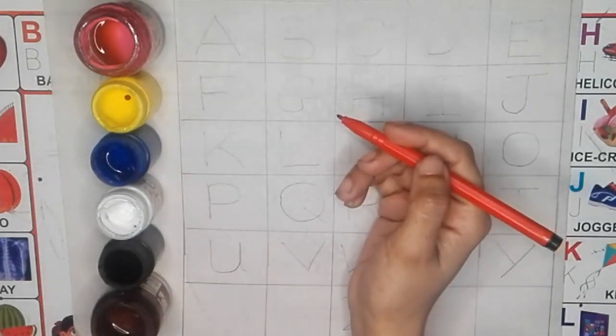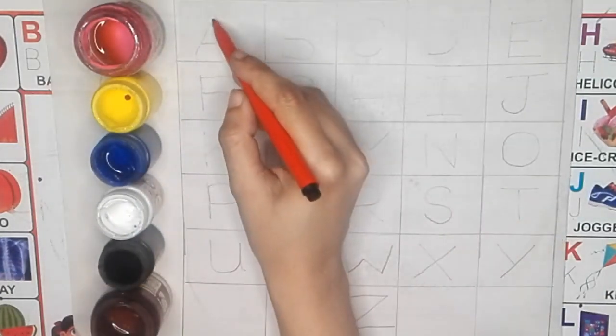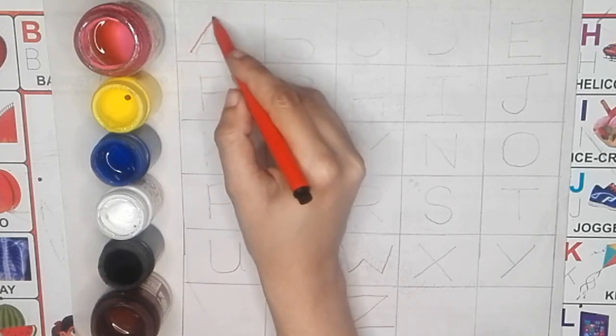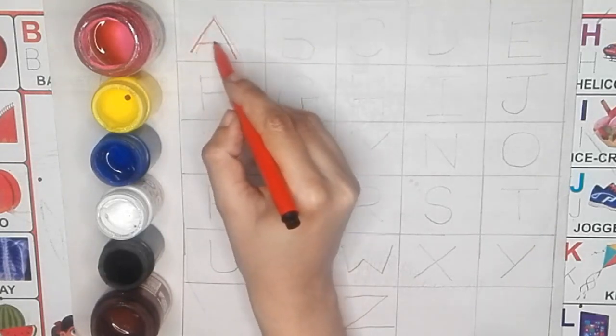Let's start to learn how to write A, B, C, D. A, A for apple, A for apple.